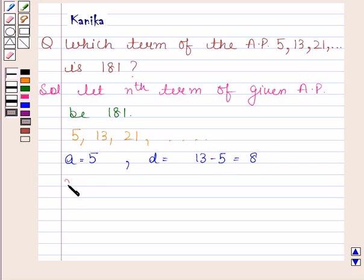We know that nth term of AP, that is AN, is given by A plus (N minus 1) times D.